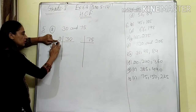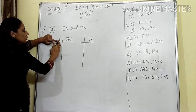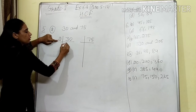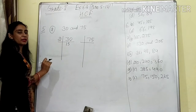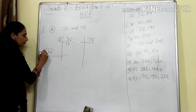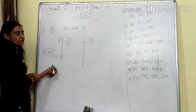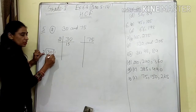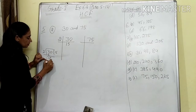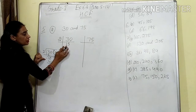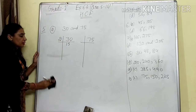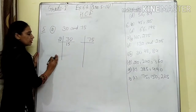When you divide 30 by 2, you will get 15 as the quotient. You have to write the quotient here. Whatever quotients you get, you have to write them here only.